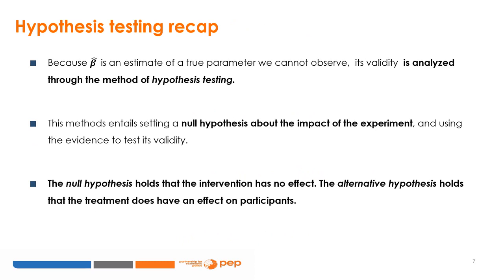Hypothesis testing: because beta-hat is an estimate of a true parameter that we cannot observe, its validity is analysed using the method of hypothesis testing. This method entails setting a null hypothesis about the impact of the experiment and using the evidence to test its validity. The null hypothesis holds that the intervention has no effect. The alternative hypothesis holds that the treatment does have an effect on participants. If the evidence allows us to reject the null hypothesis, we accept the alternative hypothesis.